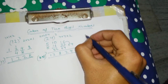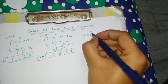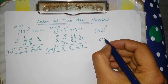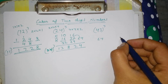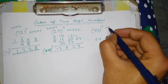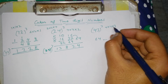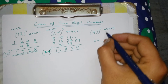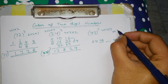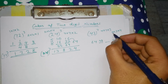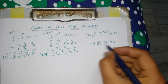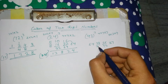Next we will do the cube of 43. The cube of 4 is 64 and the cube of 3 is 27. The second digit is 4 into 4 into 3: 4 times 3 is 12, and 12 times 4 is 48. The third digit is 3 into 3 into 4: 3 times 3 is 9, and 9 times 4 is 36. Double both these middle digits: the answers are 72 and 96.